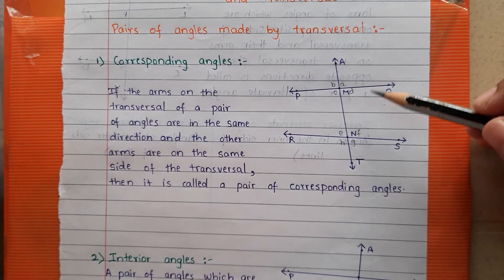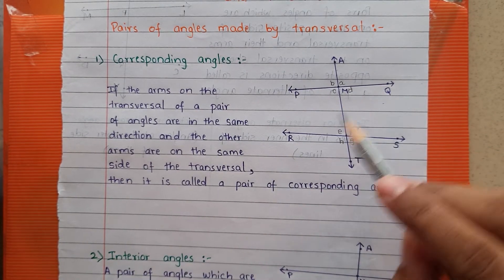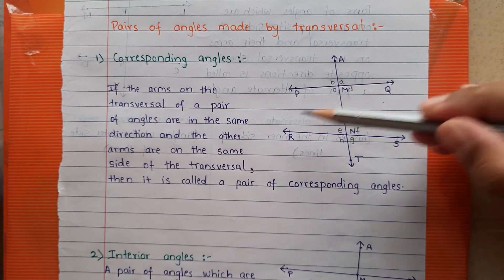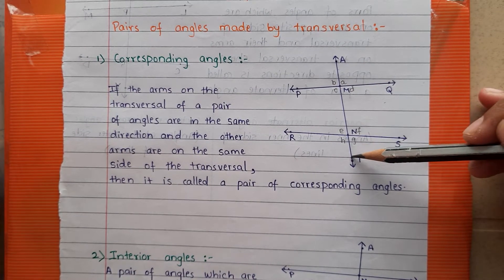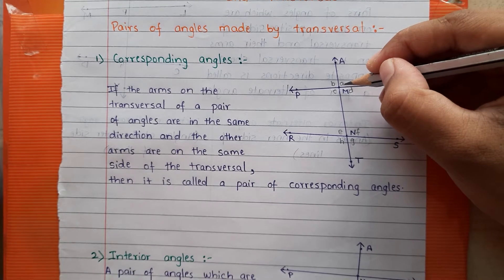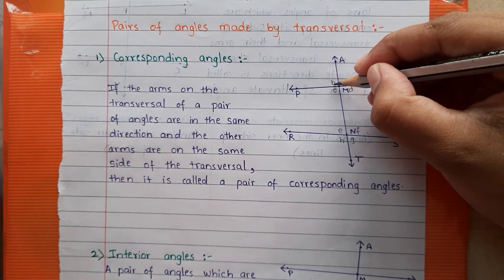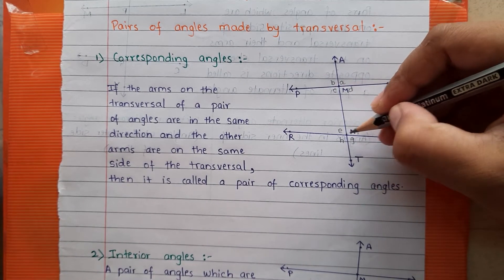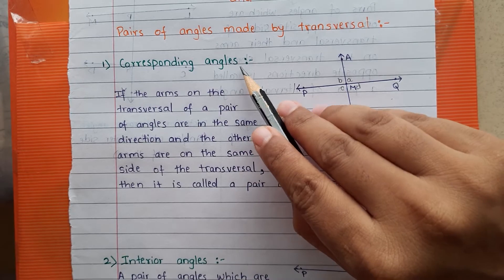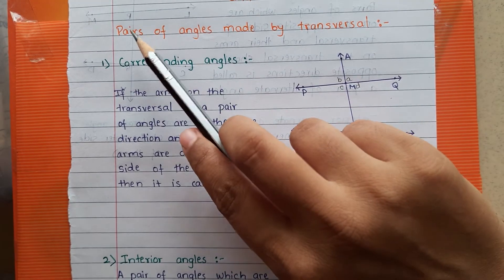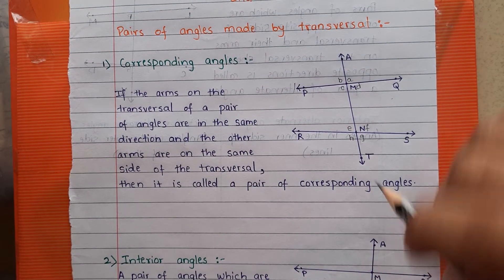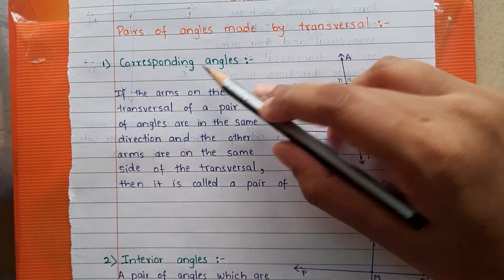We are going to start with the pair of angles made by a transversal. I have drawn one figure with two lines PQ and RS, and the transversal is line AT. Because of this transversal, eight angles are formed, labeled A, B, C, D and E, F, G, H. The first type is corresponding angles.